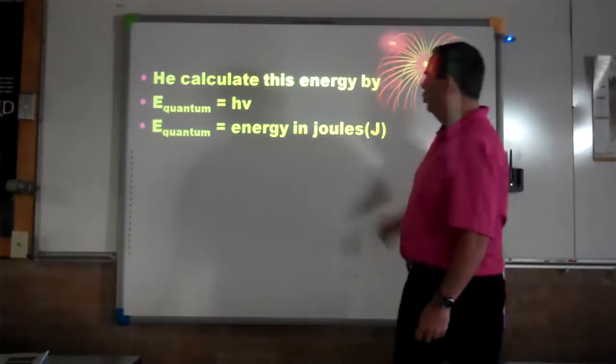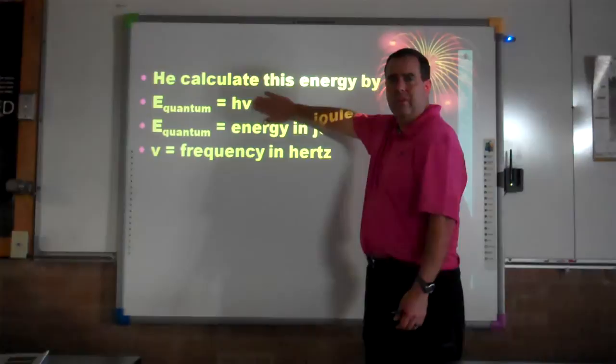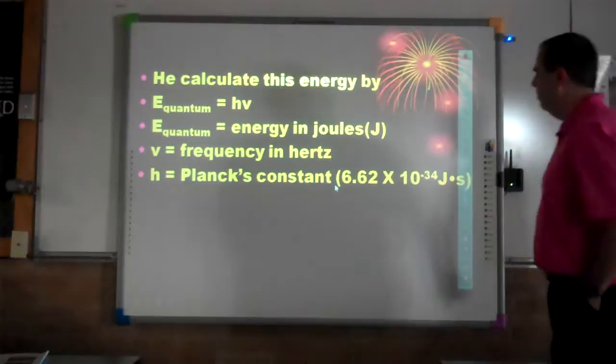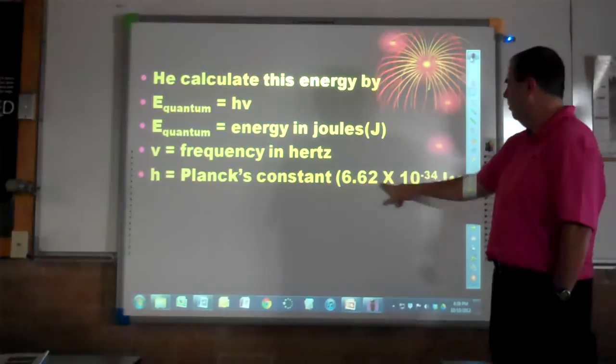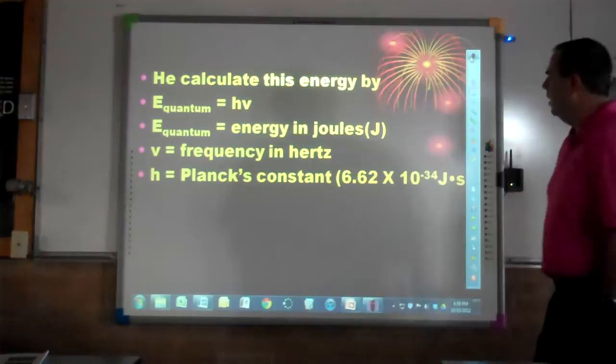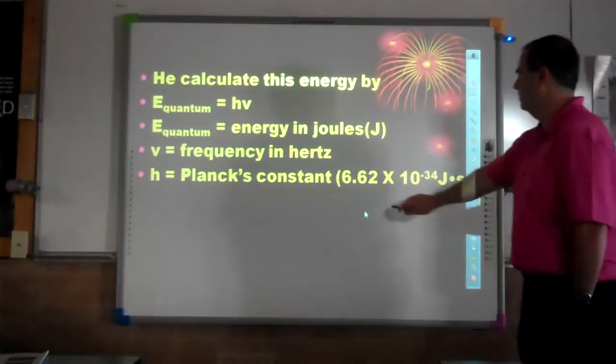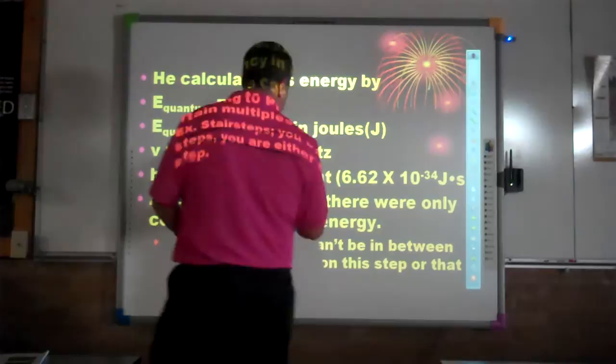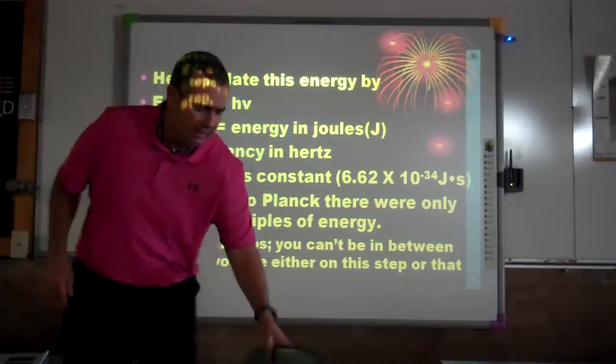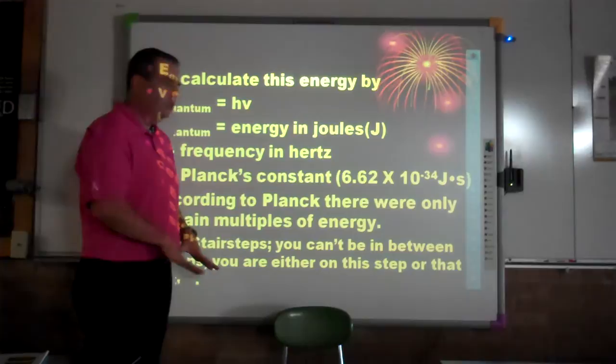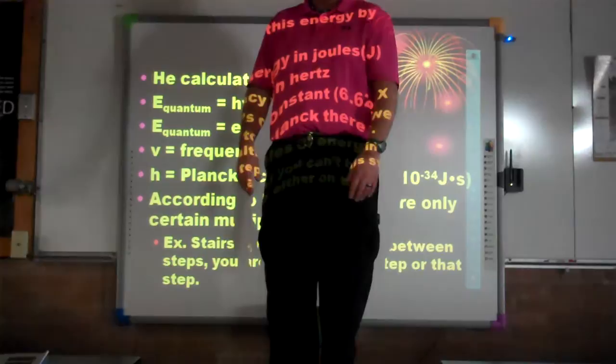Quantum energy is measured in joules, and frequency v is still measured in hertz. Planck's constant is 6.626 × 10⁻³⁴ joules·seconds. According to Planck, there were only certain multiples of energy — like a stair step. You're at ground level at your lowest energy state, and when you step up you're at a higher energy state. You can't be in between levels — you're either here or you're here.